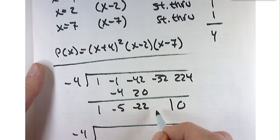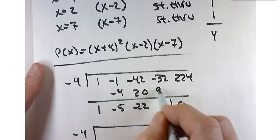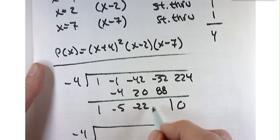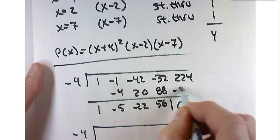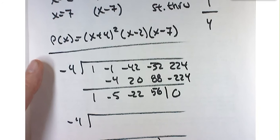A negative 22, and then positive 88, and that's going to give me 56, and then a negative 224, it gives me 0.